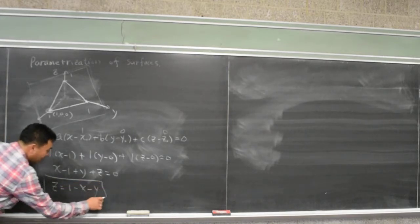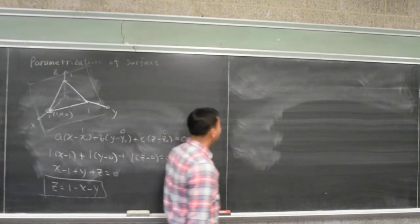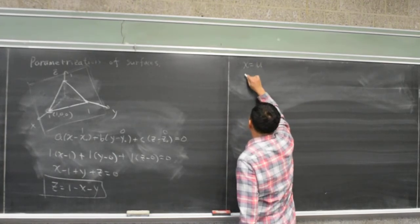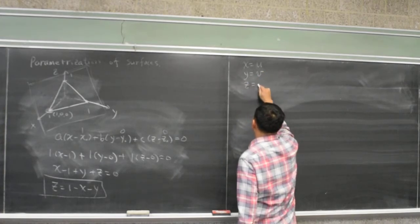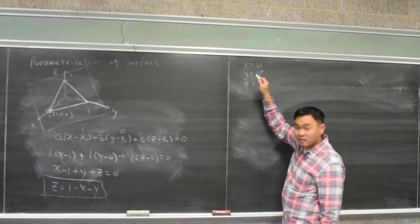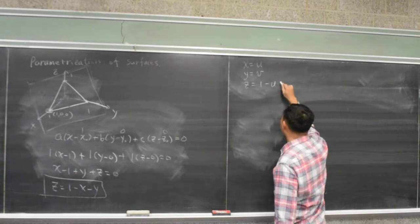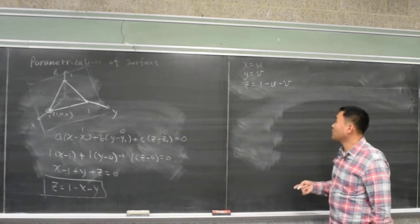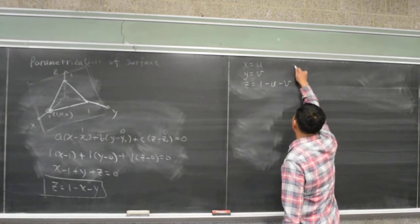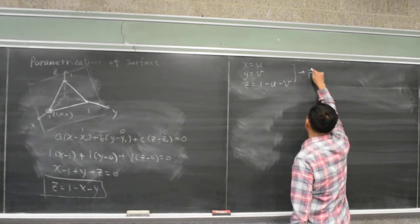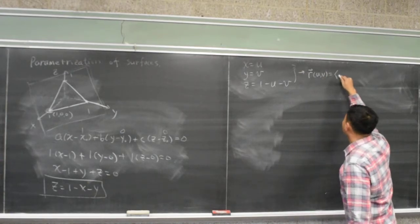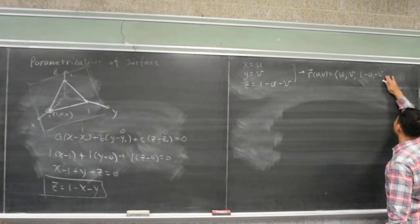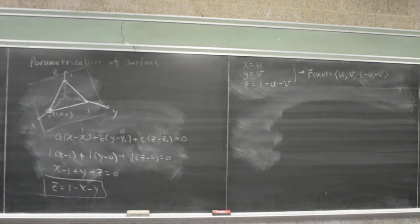Given that this is the equation of the plane, now we can parametrize it as the following. We can say, if x is u and y is v, then z would be what? 1 - u - v, because z is 1 - x - y, but I said x is u, y is v, so z would be 1 - u - v. So, you can write this as r(u,v) = (u, v, 1 - u - v).